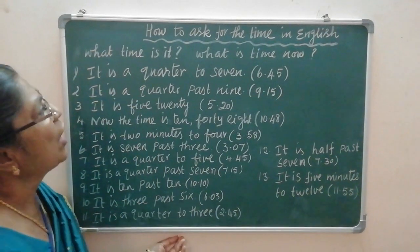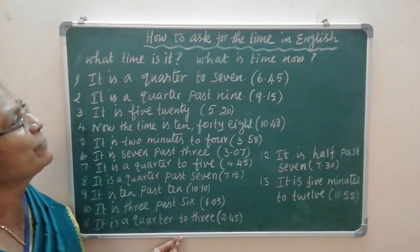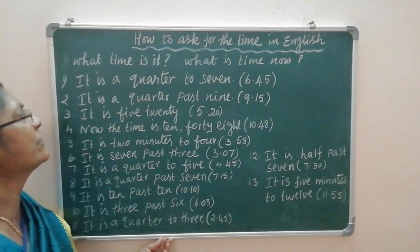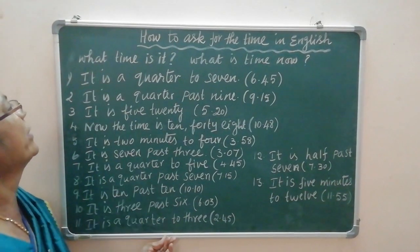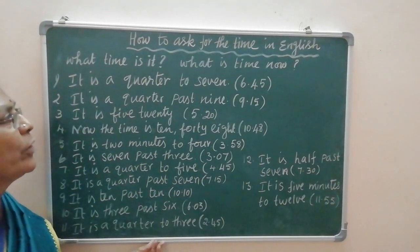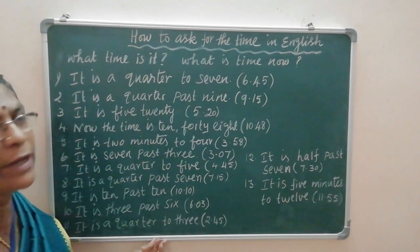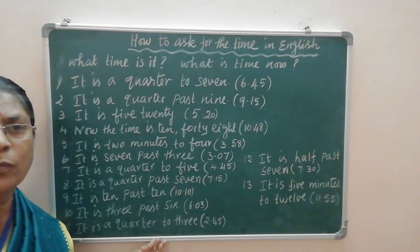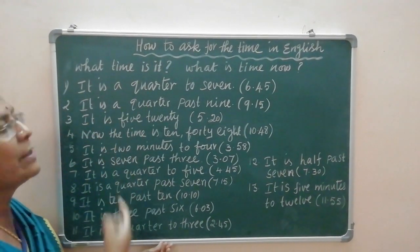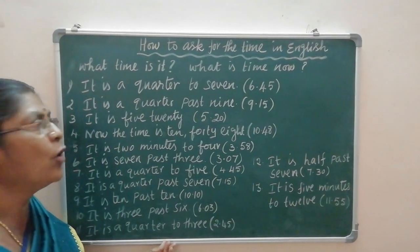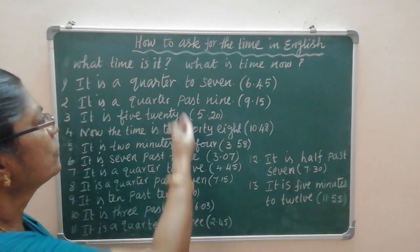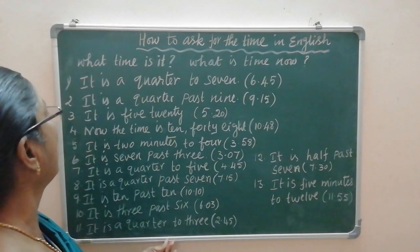Today we are going to learn how to ask for the time in English. Usually you are asking, 'What time is it?' Or else, 'What time now?' or 'What is time now?' You can ask 'What time is it?' or 'What is time now?' These are the answers.